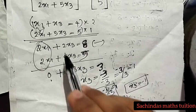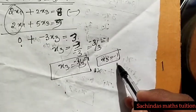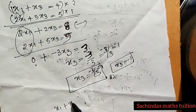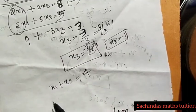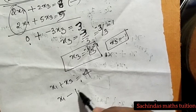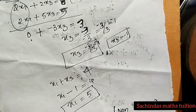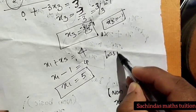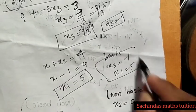Minus 3x3 equals 3, so x3 equals minus 1. Then x1 plus x3 equals 4, so x1 minus 1 equals 4, giving x1 equals 5. We have one basic solution: x1 equals 5, x3 equals minus 1.